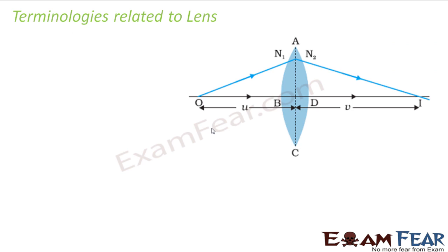Now let us quickly look at the terminologies related to a lens. These will be very similar to what we discussed for spherical mirrors and refraction at spherical surfaces, where terminologies like pole, center of curvature, radius of curvature, focal length, and principal focus remained the same. Let us have a quick look so we don't get confused as we go ahead.